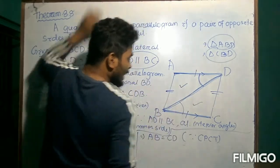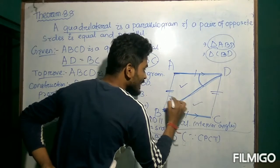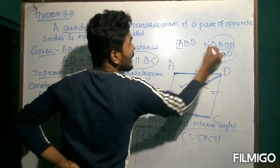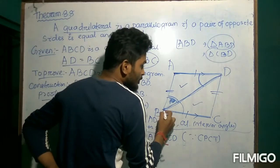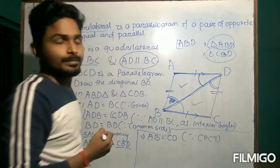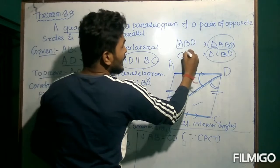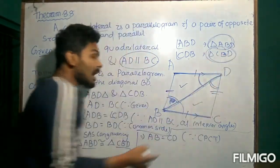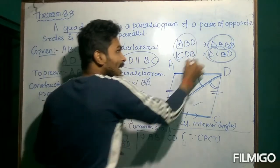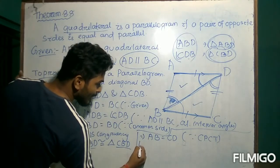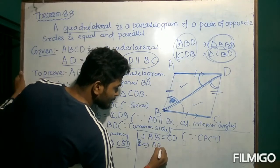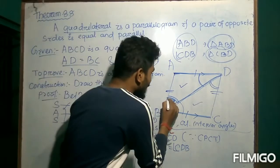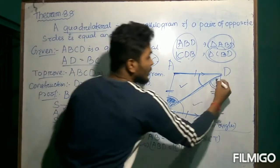If we consider triangle ABD, angle ABD is an angle of this triangle. Similarly, for triangle CBD, angle CDB is an angle of that triangle. But we have proved that these two triangles are congruent, so we can write that their corresponding angles must be equal. Therefore angle ABD equals angle CDB.